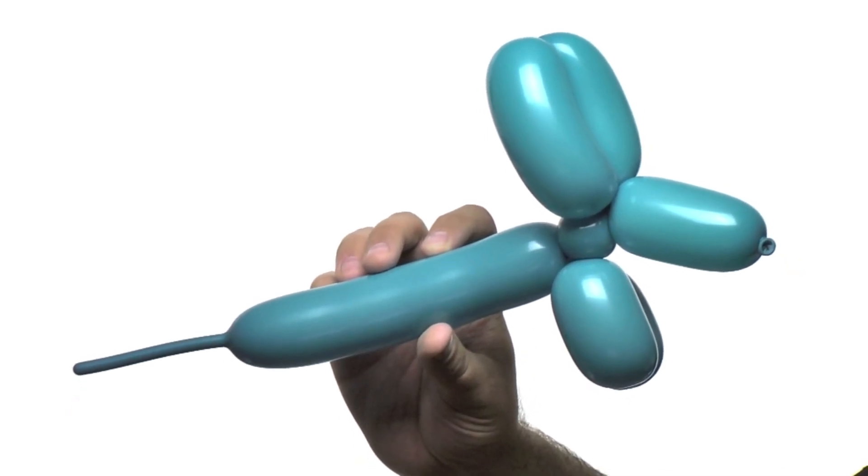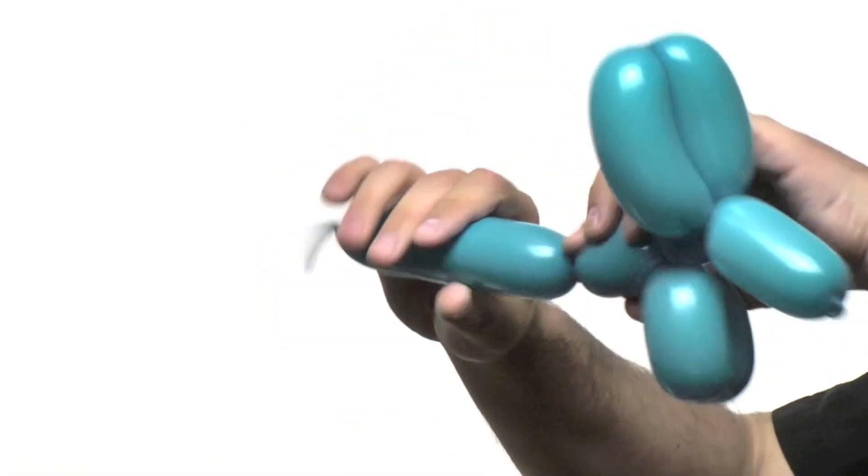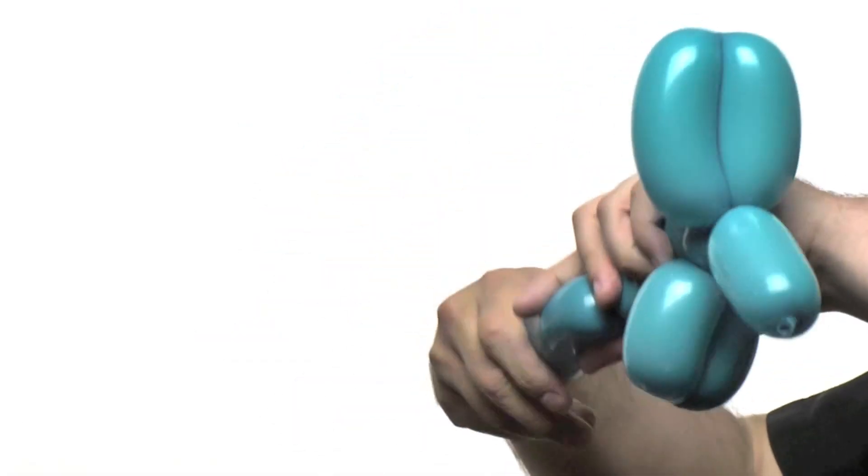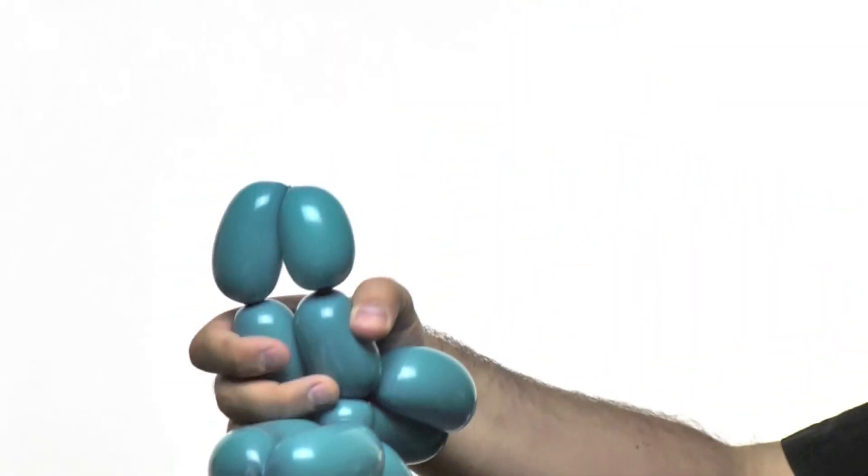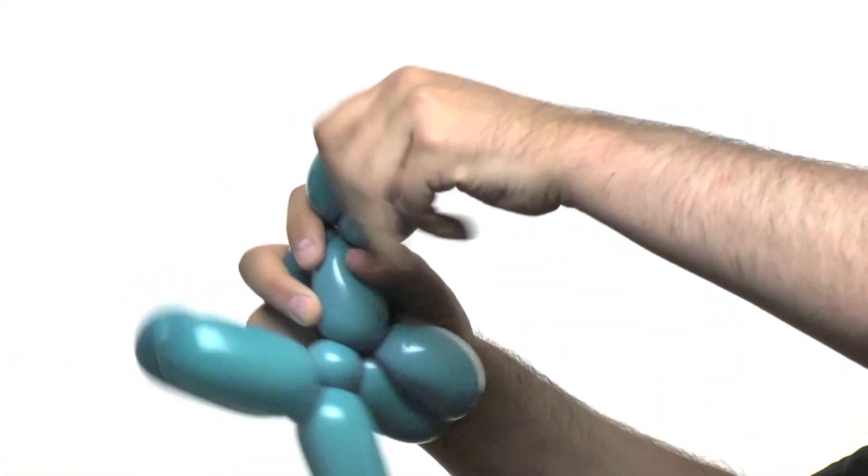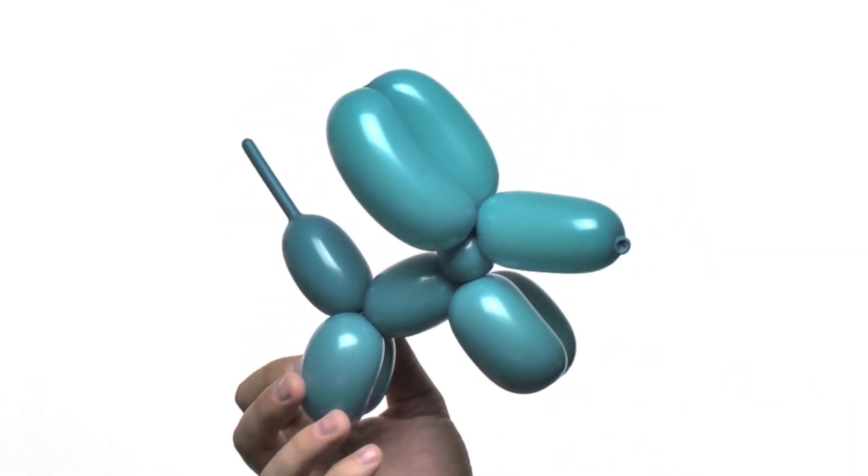Now just like we did those legs, we're going to do another set of legs for the back. Twist a section, followed by two sections of equal length. Fold it over. Twist them together. Straighten it up and there we have our balloon dog.